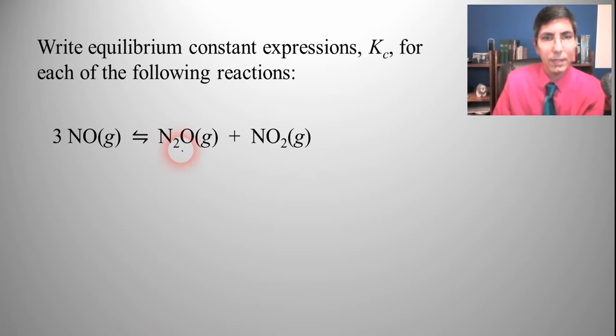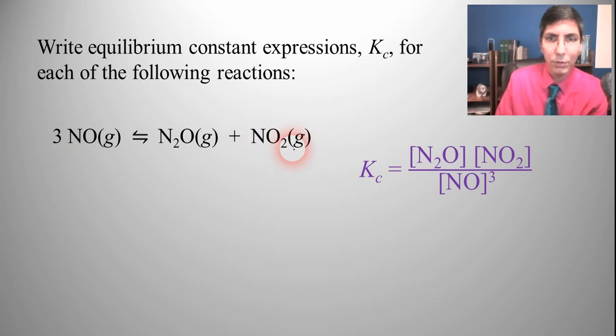So in this case we're going to have N2O times NO2 concentration all over NO, and the NO has to be cubed since there's a 3 in front of that. So we can see how we write the equilibrium constant expression.